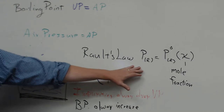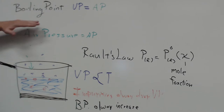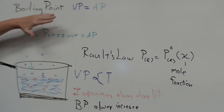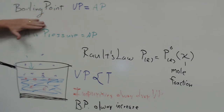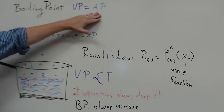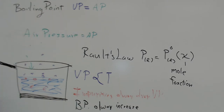Raoult's Law is all about the impurity factor on vapor pressure. Remember, boiling point doesn't change in that sense — vapor pressure still has to reach air pressure, or the liquid cannot boil.